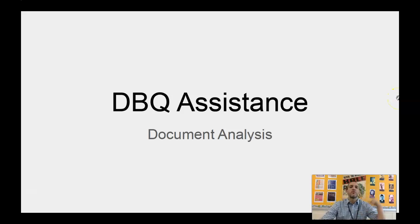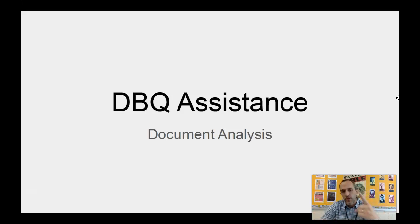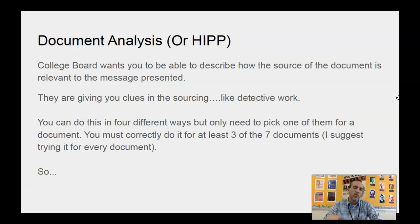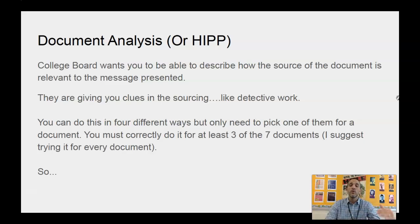What is up everybody, Mr. Curtis here. Welcome to the second video on how to DBQ. This one is focused specifically on one point on the rubric, but I find that most people have the biggest difficulty with this one, so I want to make it its own separate thing. This is on document analysis — analyzing the document, specifically the source of the document and its impact on the message. I'm going to call this HIPP. Other teachers call it HIPPO, HIPPIE, SOAP, SOAPSTONE — there are all kinds of different things. The new one, over the past couple of years, that's become more common for AP World, AP US, and AP European History, is HIPP.